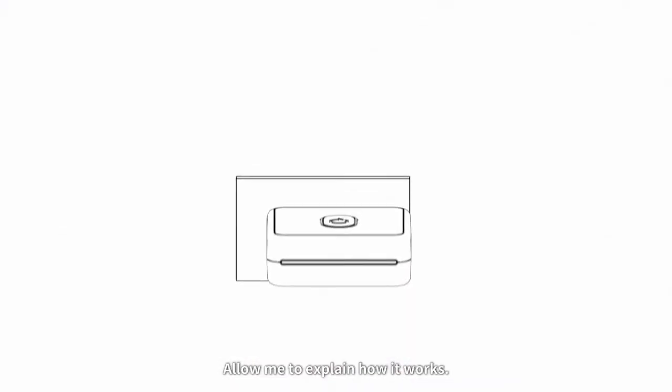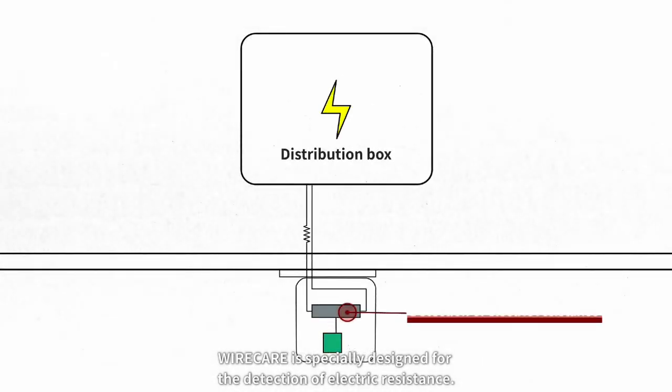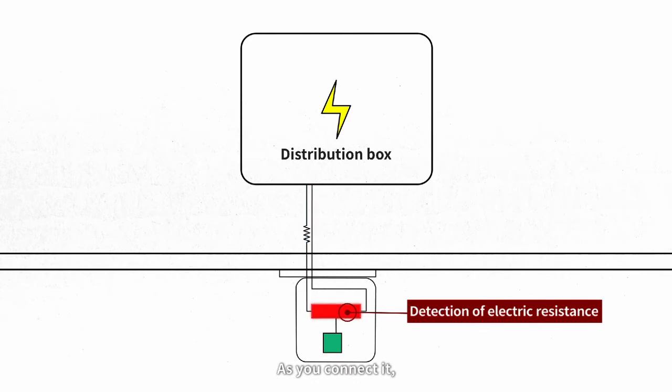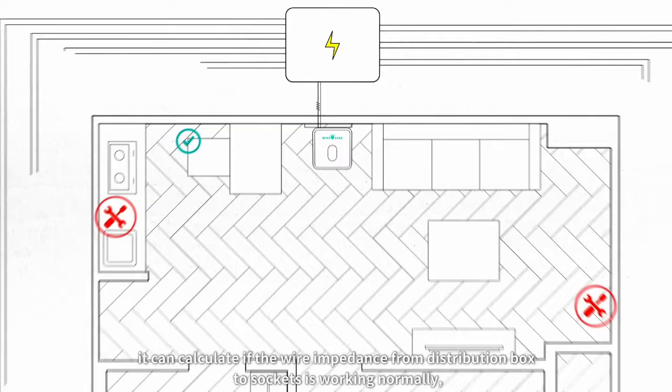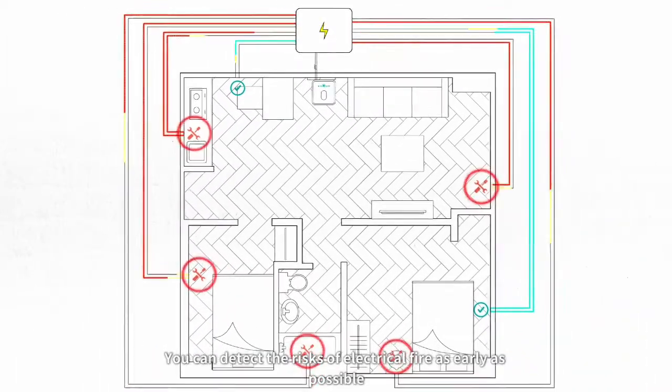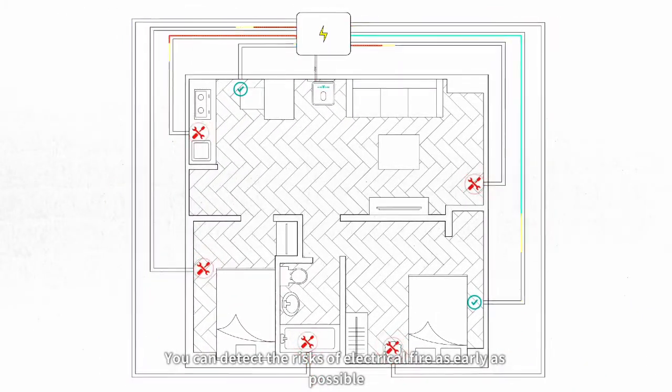Allow me to explain how it works. Wire Care is specially designed for the detection of electric resistance. As you connect it, it can calculate if the wire impedance from distribution box to sockets is working normally. You can detect the risks of electrical fire as early as possible.